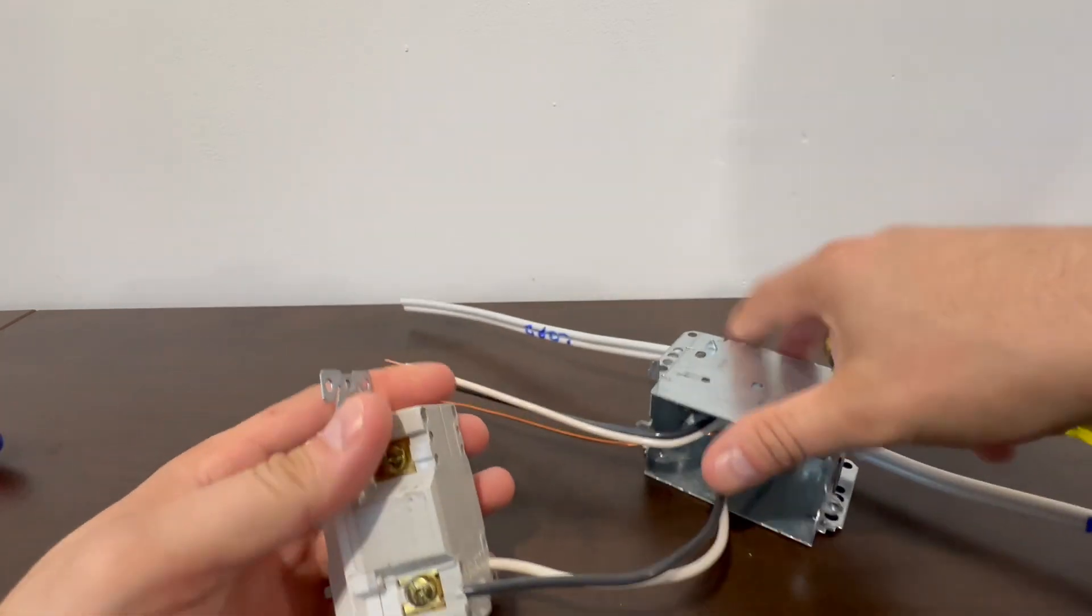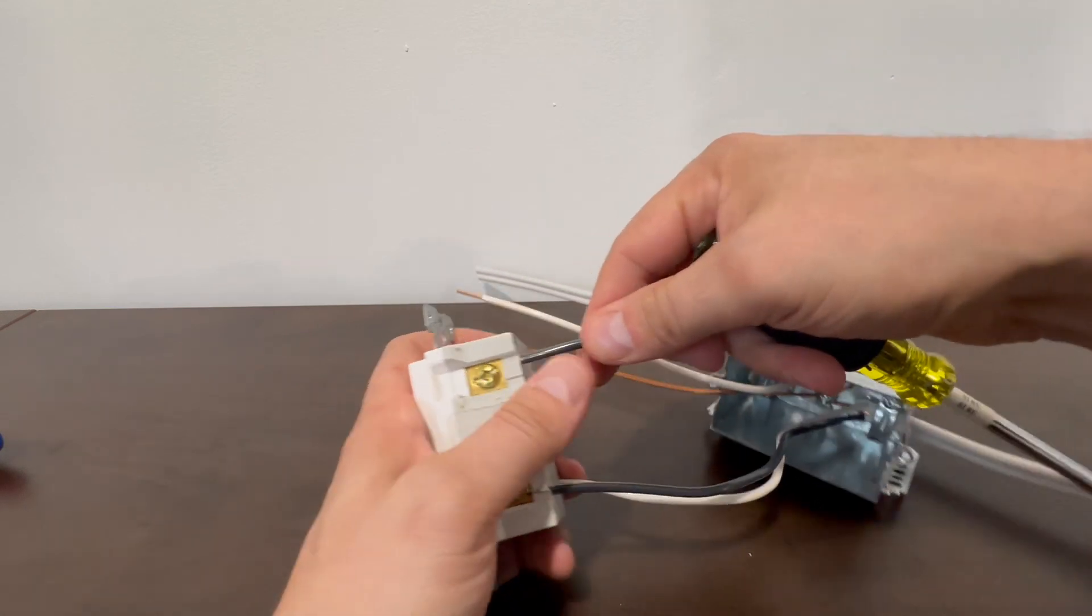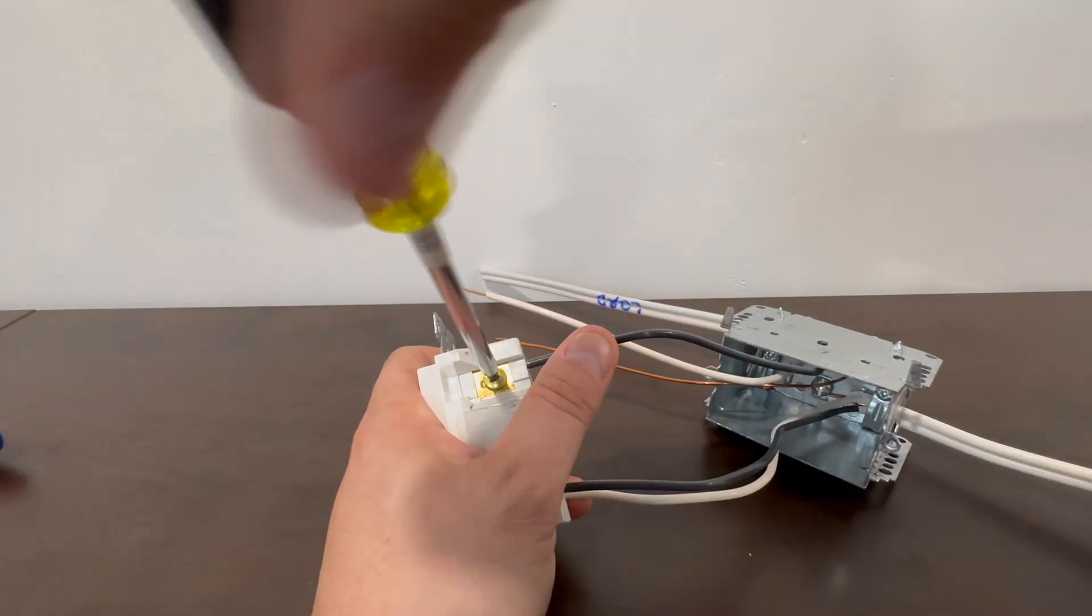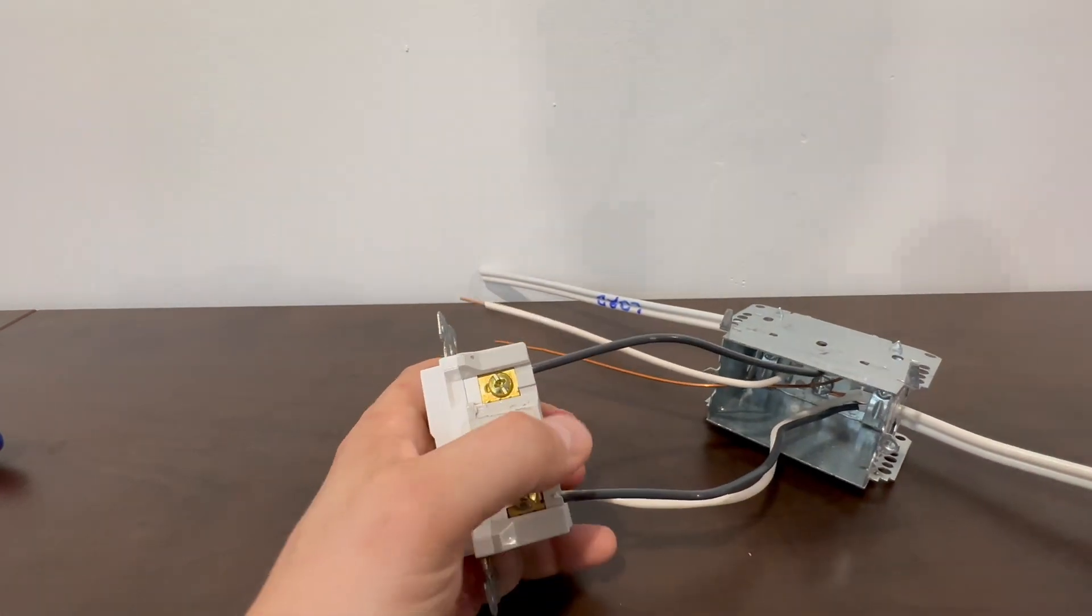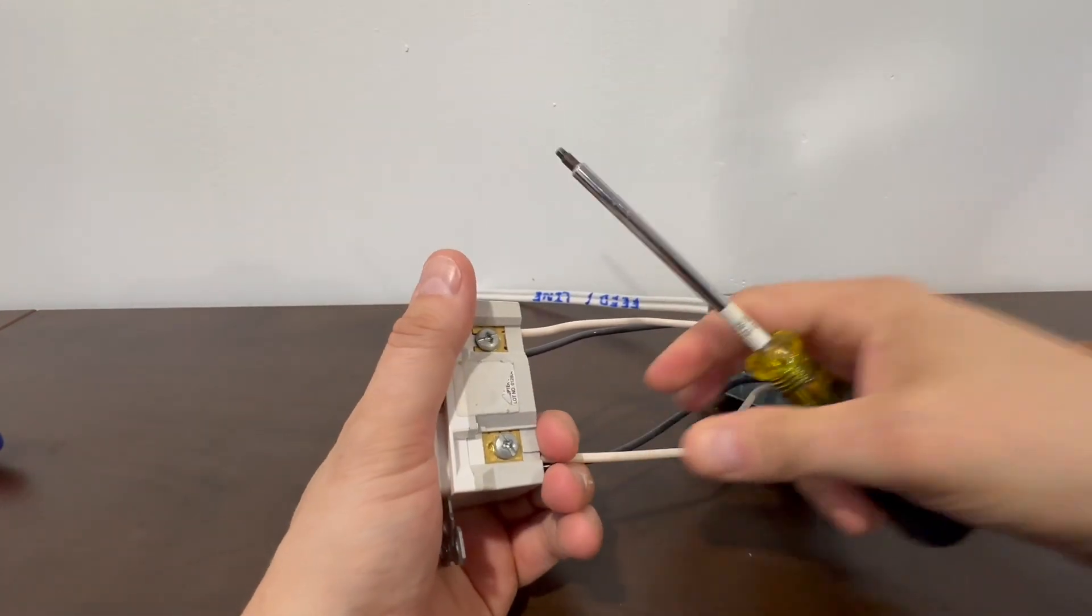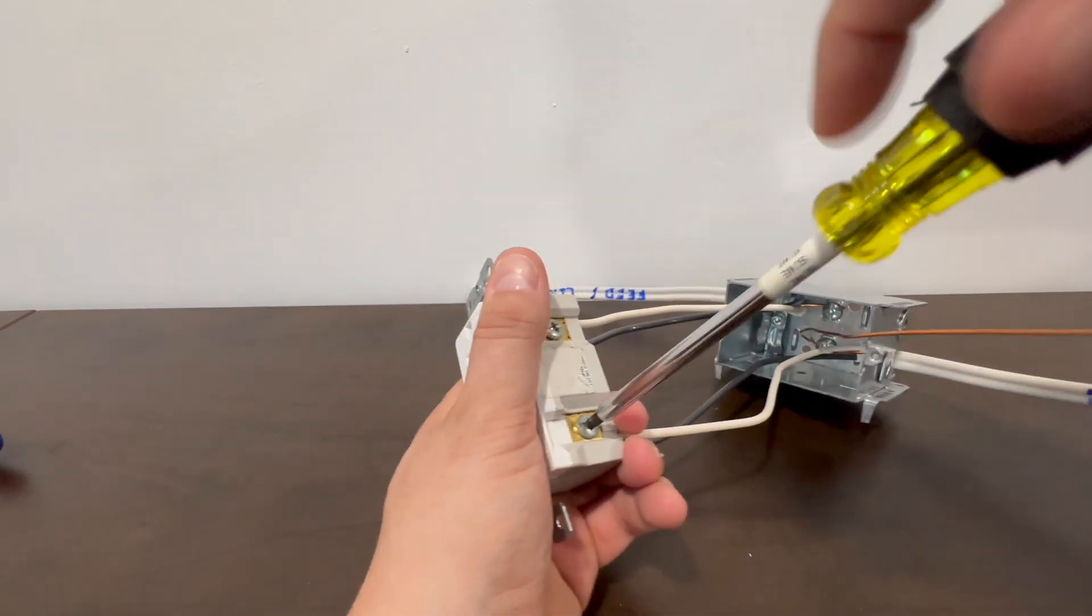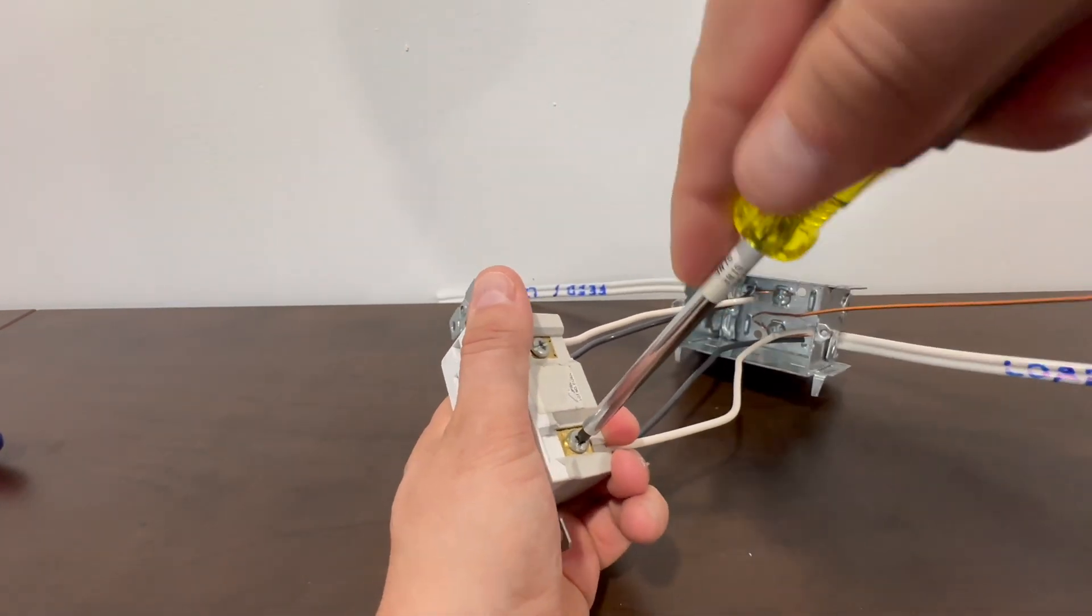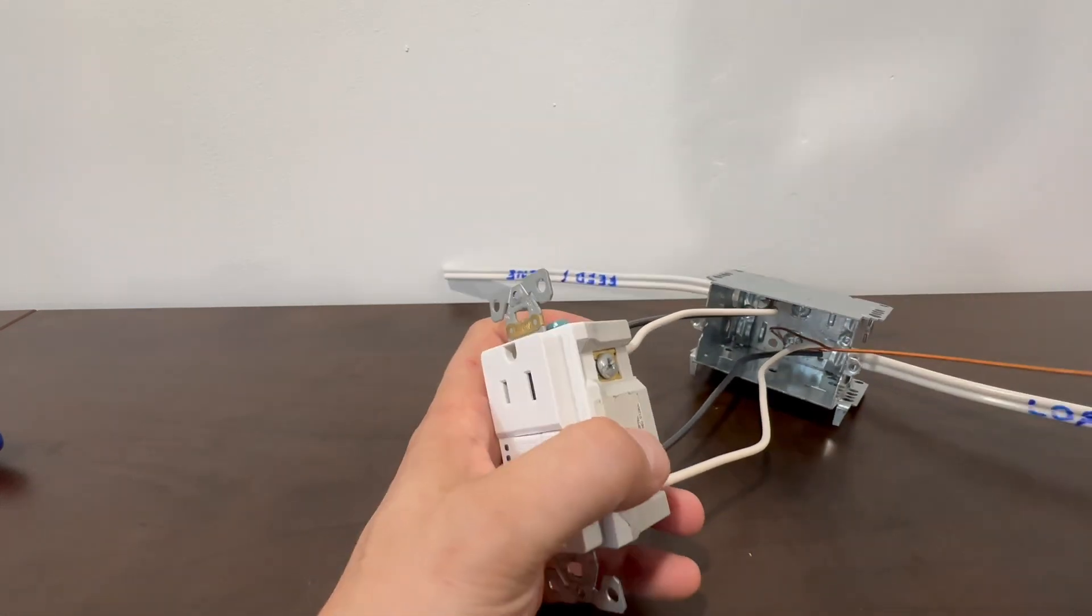Okay, we'll do the same thing with the load side. Again, load side goes in the black on brass. Tighten that up nice and tight. You don't have to over torque it. Give it a little test when you tighten it off. You can strip those, so you do want to be somewhat careful. Again, holding that nice and tight. Tighten that up and give them a little tug test. Make sure they're good to go.